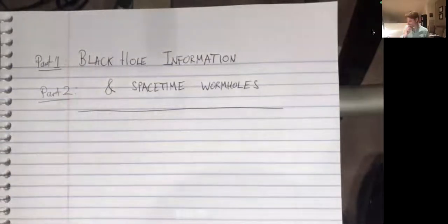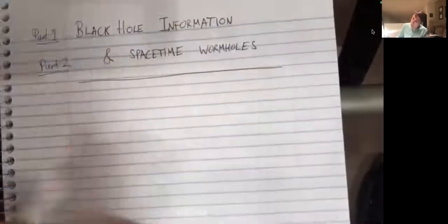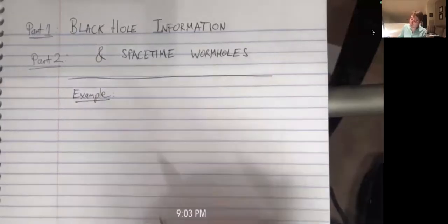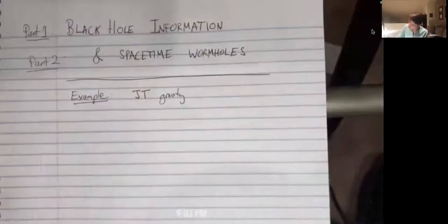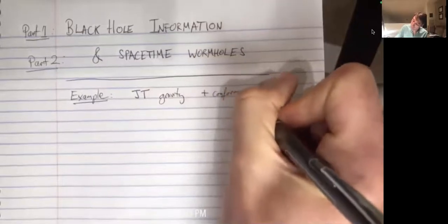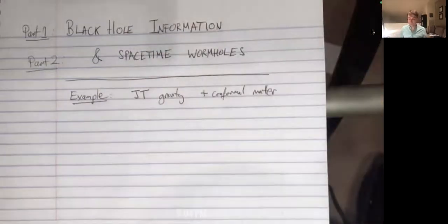Spacetime wormholes were studied a lot in the 80s but have had something of a resurgence due, at least partly, to this information problem. Throughout the lectures, we're going to use a nice example of a gravitational system — specifically Jackiw-Teitelboim gravity, which is a two-dimensional model. Sometimes we're going to couple this to matter, specifically conformally invariant matter. This will be a nice example that can illustrate the things we're going to talk about very explicitly, but most of the things I say apply much more generally.